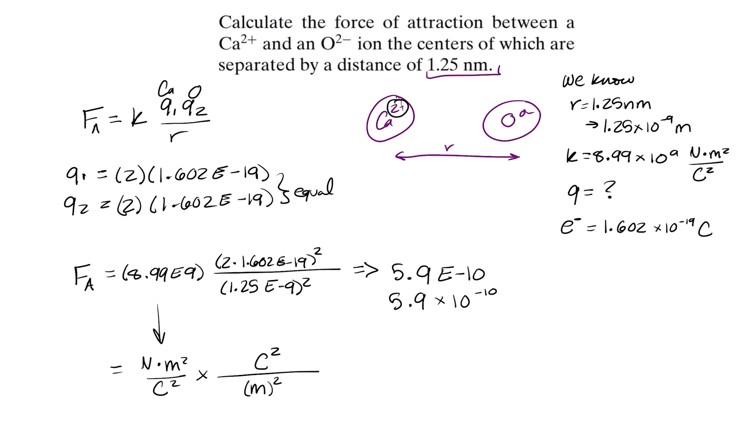So we can go ahead and we'll cancel the Coulombs, the meters. And just like we thought, that gives it to us in Newtons. So that's our answer, 5.9 times 10 to the negative 10th Newtons.